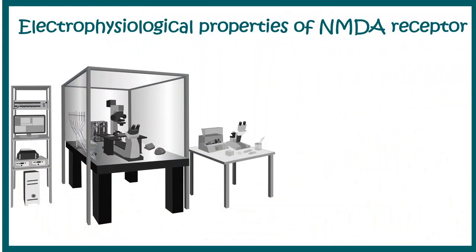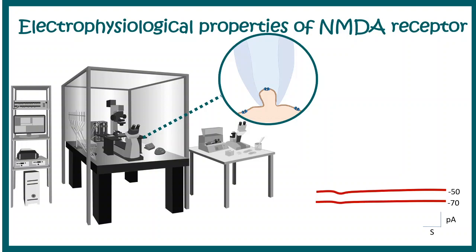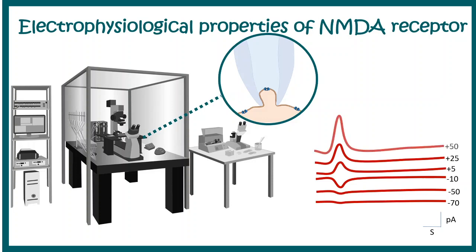Let's talk about the electrophysiological properties of the NMDA receptor. Using voltage clamp recording: at negative potential, the current is pretty much flat. At minus 70 millivolts there is almost no current; at minus 50 there is a minuscule current. If we go to minus 10 millivolts, which is more positive compared to the resting membrane potential of minus 65 millivolts, we see some inward current. At positive potential, we see a current whose amplitude is much larger.